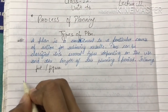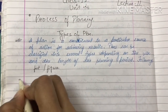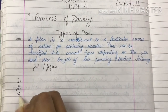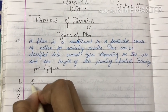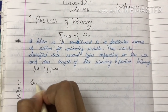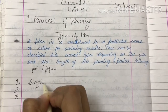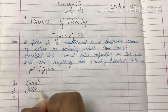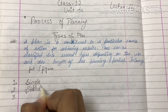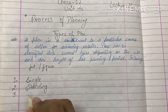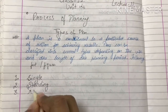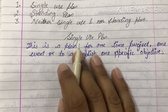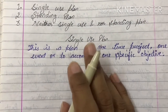So we have three types of plan. The very first one is single use plan, another one is standing plan, and the next one is neither single use nor standing plan. So here we go with a single use plan.